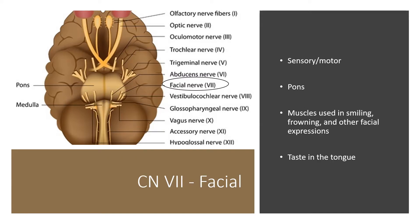Cranial nerve 7 is the facial nerve. It has both sensory and motor function and is located at the pons. This nerve innervates your muscles used primarily in smiling, frowning, and other facial expressions. Its sensory function involves taste at the level of your tongue.